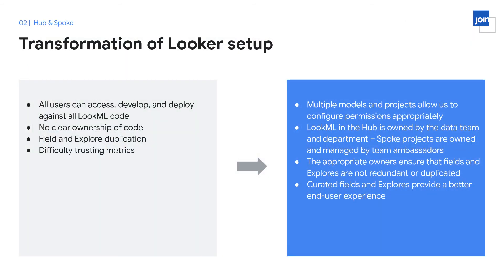Using Looker's project import functionality and the hub and spoke architecture, our team was able to solve the problems we previously ran into. Having multiple models and projects allowed us to configure permissions appropriately so that teams only saw information relevant to them. Each project now has clear ownership — the hub is owned and managed by the centralized data team, and the spokes are managed by ambassadors. Having appropriate owners ensures that fields and explorers are not redundant or duplicated, which promotes a much better end-user experience.